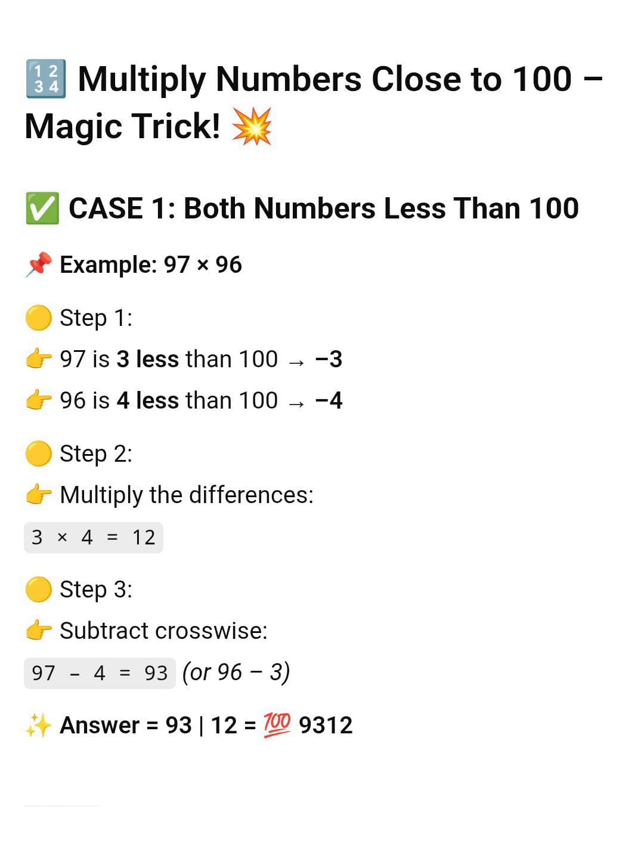96 is 4 less than 100, so minus 4. Take product, 3 x 4 equal to 12. Subtract crosswise, 97 minus 4 or 96 minus 3. Anyway, we will get same answer, 93, so answer is 9312.